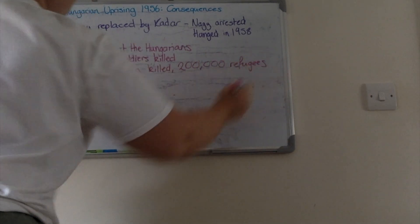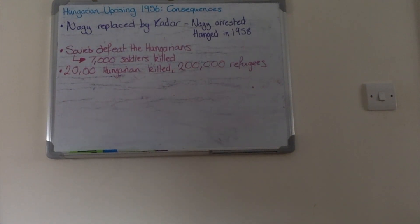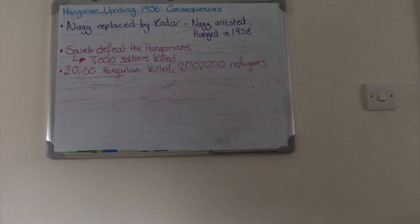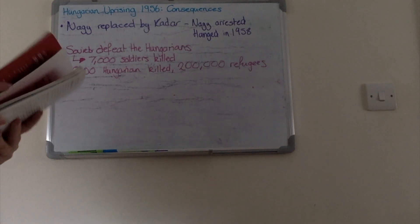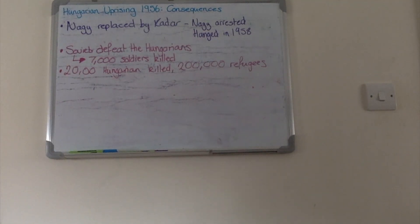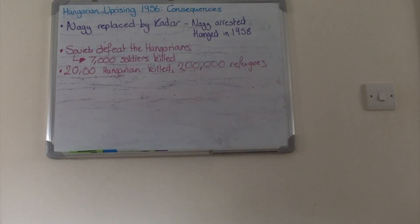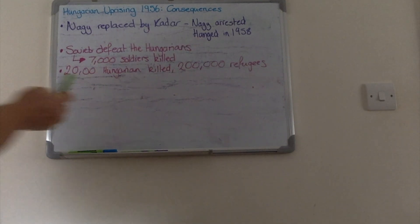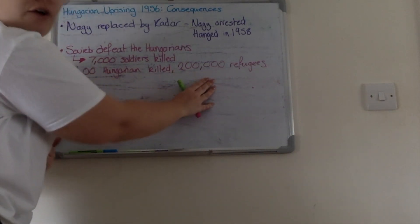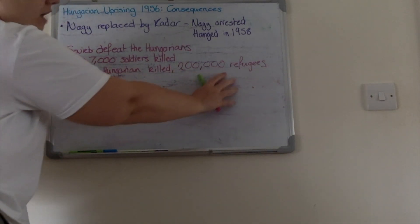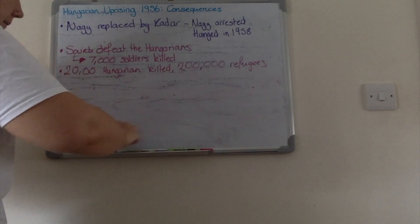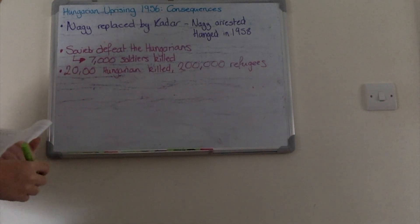200,000 Hungarians become refugees — meaning 200,000 Hungarian people leave Hungary in order to try and take refuge in another country. Similar to what's going on now with Syria and Yemen, they are fleeing their place of terror to go and seek help elsewhere.